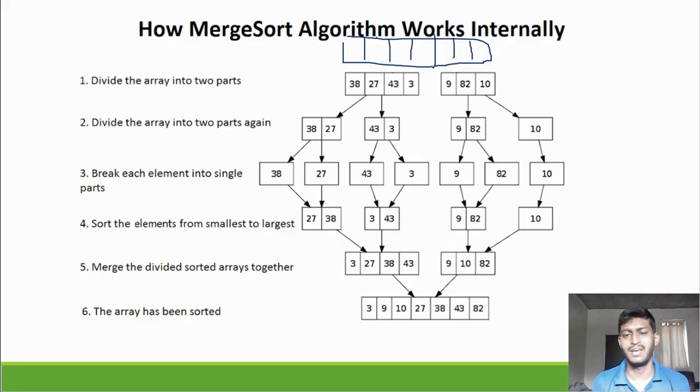First half properly divide, again half divide. आपको क्या करना है पहले divide करना है array को दो half में. I have to divide this array in 4 and 3 elements. Now I have to divide this array in 2 parts: 38, 27 on one side and 43, 3 on the other. Here 9, 82 and 10. Divide going into 1, 2 elements are separated.